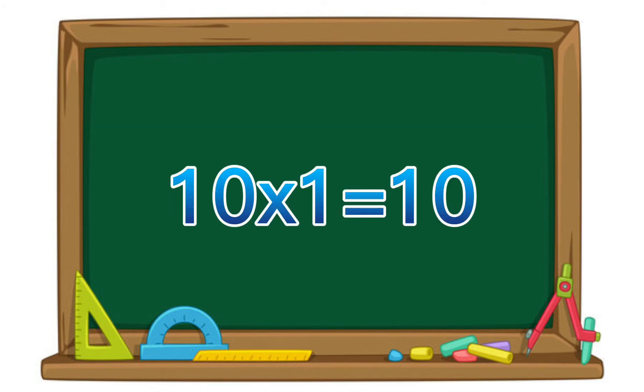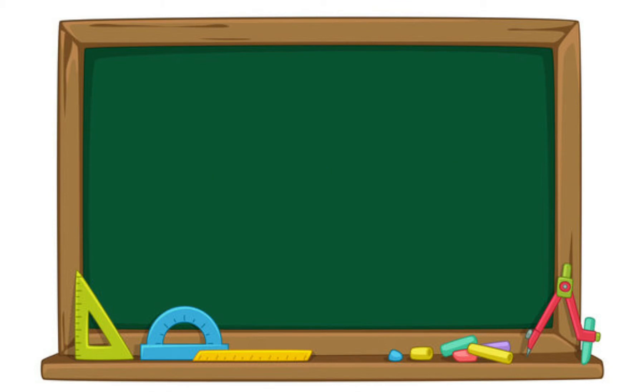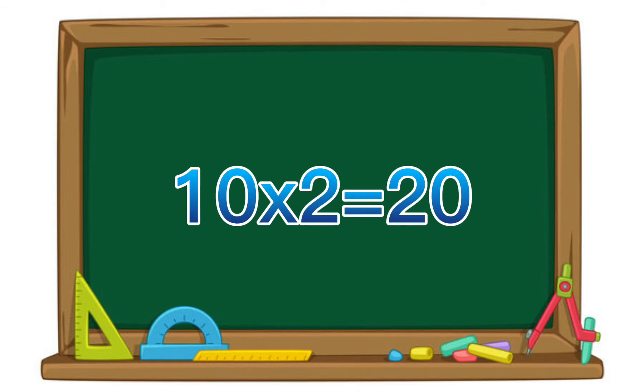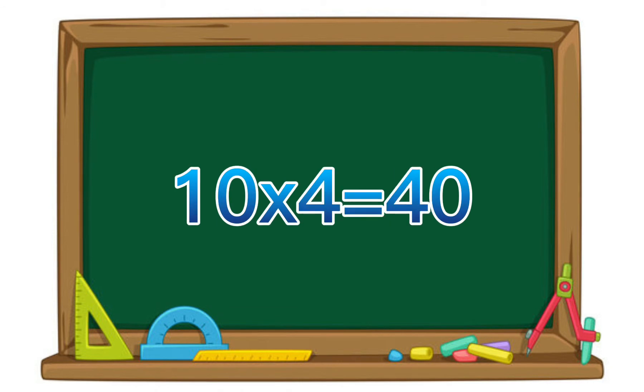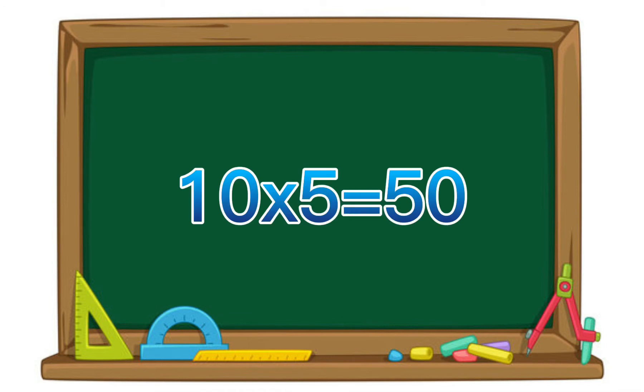10 times 1 equals 10. 10 times 2 equals 20. 10 times 3 equals 30. 10 times 4 equals 40. 10 times 5 equals 50.